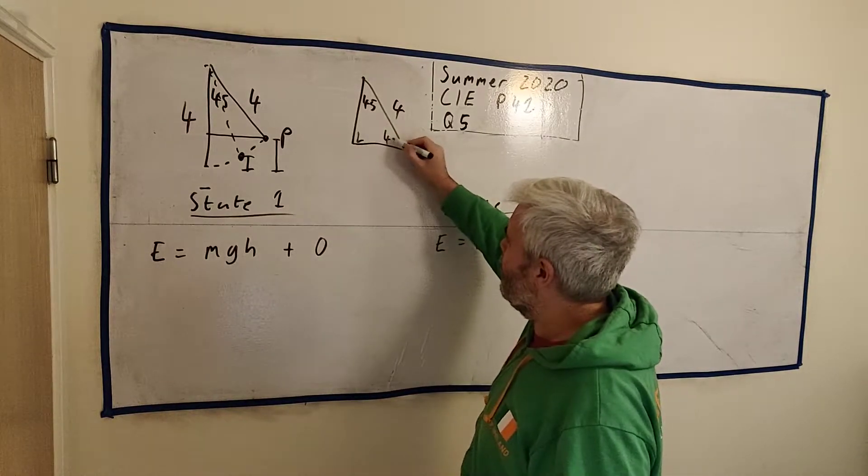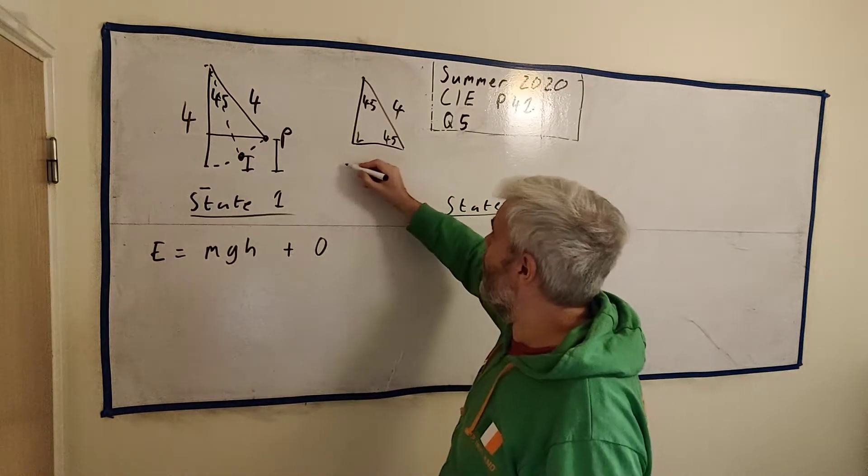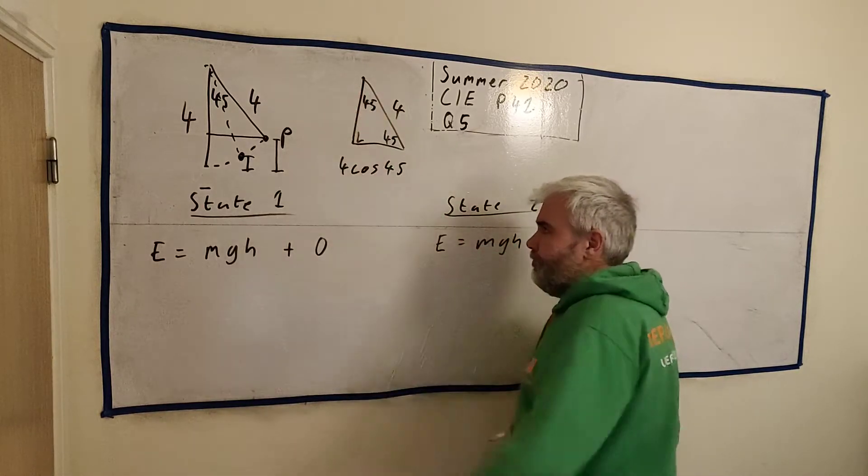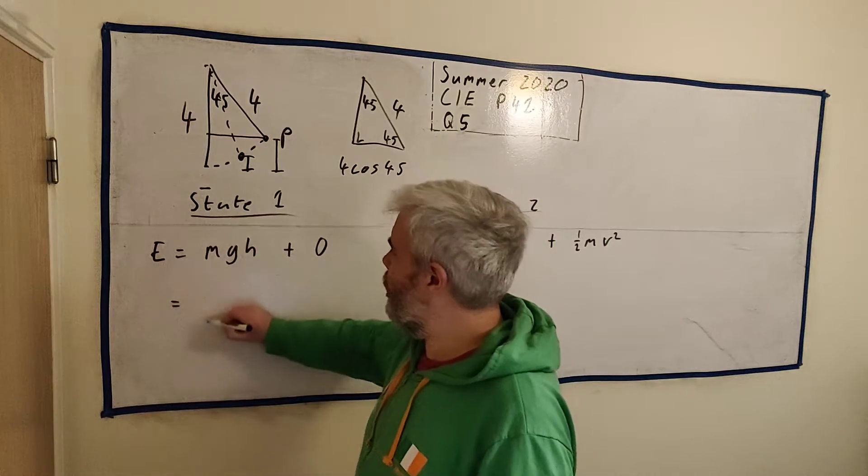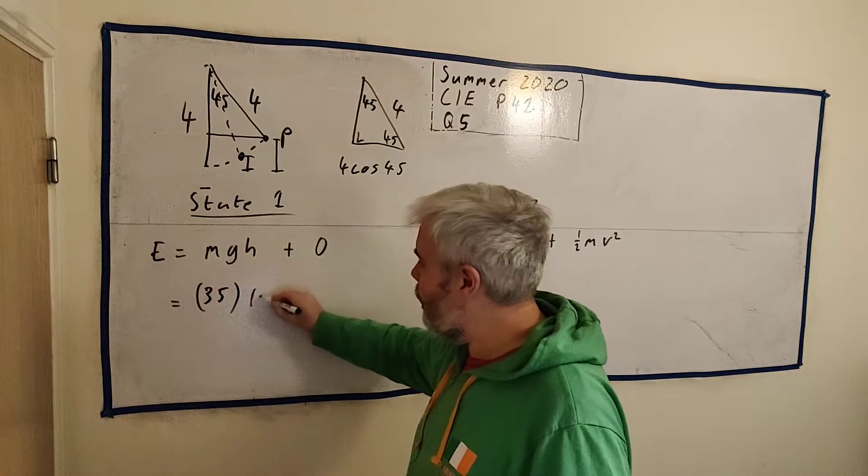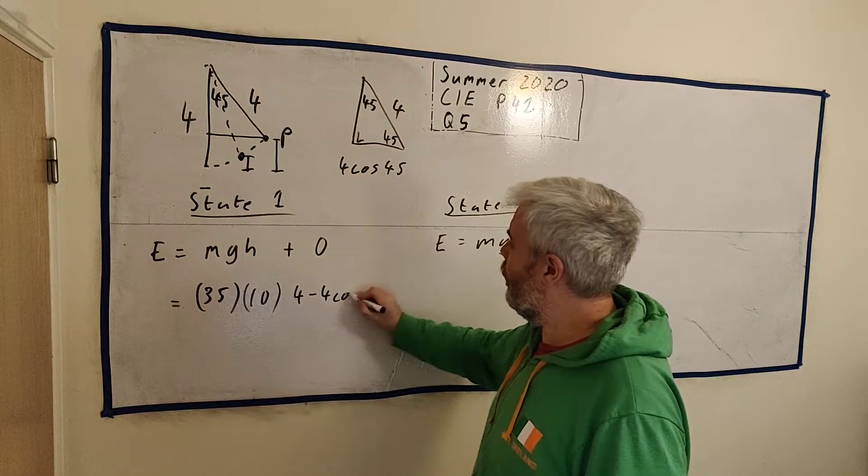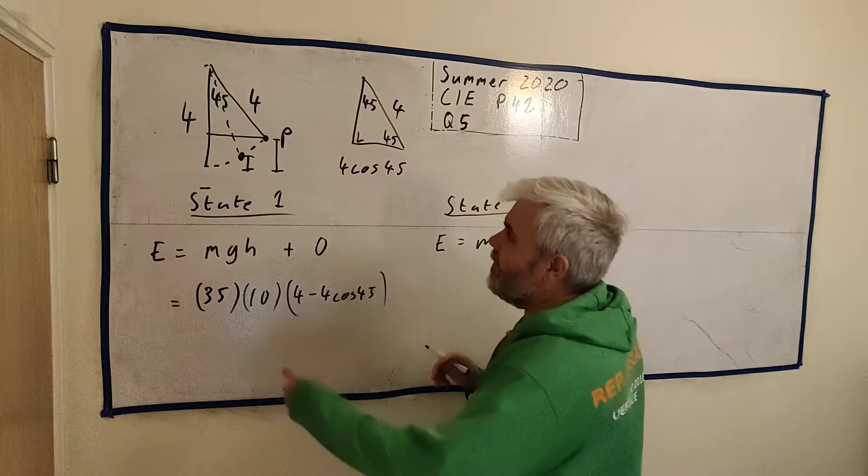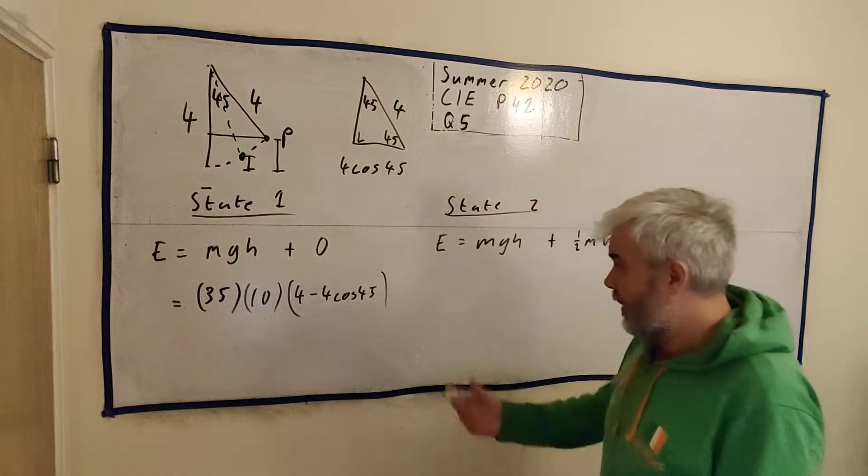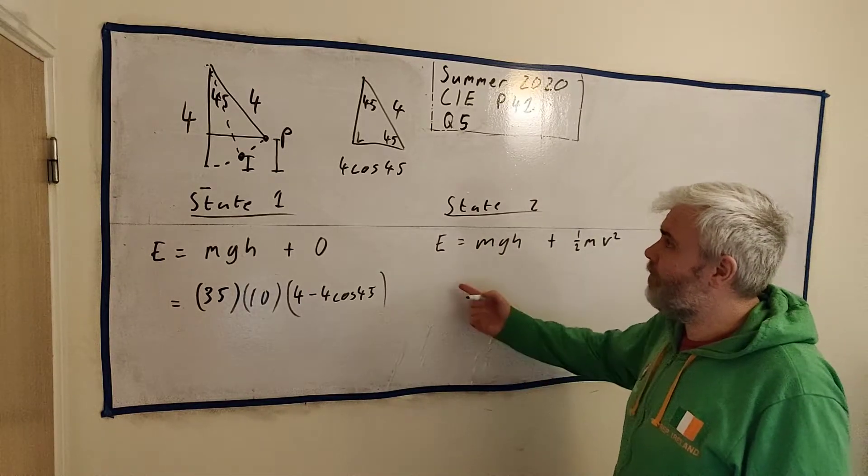So I can take that away from 4. And we can get that height. This is a right angle. This is also 45. And we can get this height by using cosine. 4 cosine 45 will tell us this. And I think that's all we need. The energy of the first system is the mass, which is 35 kilograms. The gravity, we'll take that to be 10. And the height is 4 minus 4 cosine 45. That's the entire height minus this height. That's how I got this one. And we'll put that in a calculator. We'll do that later. We don't need to do it now.